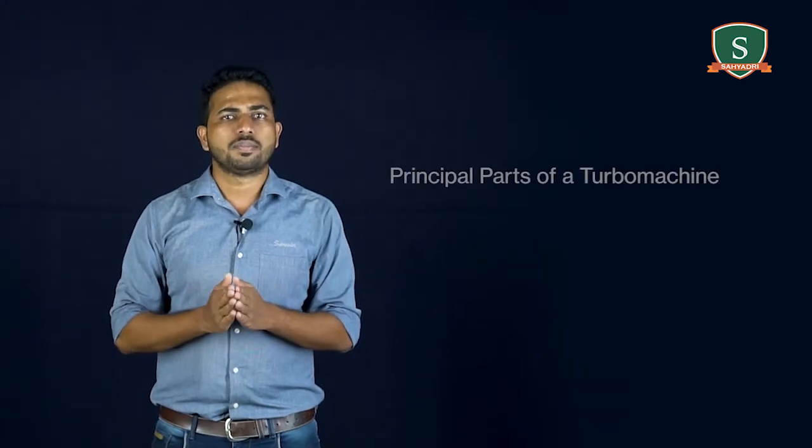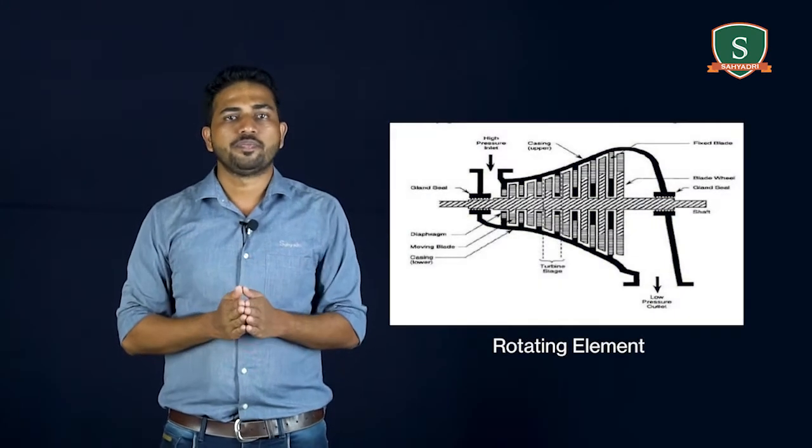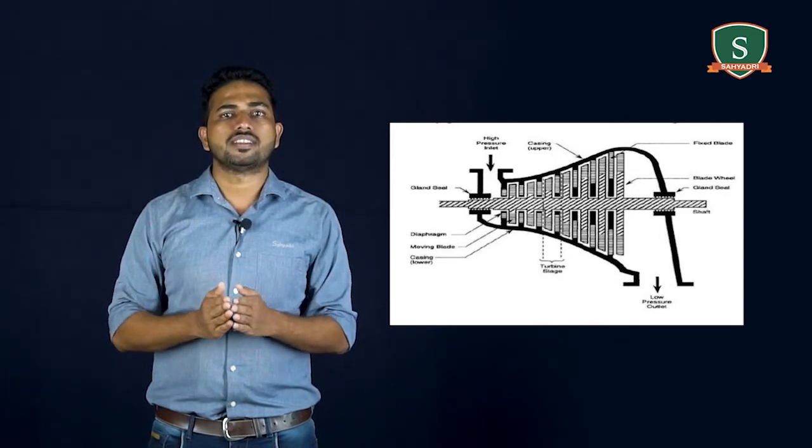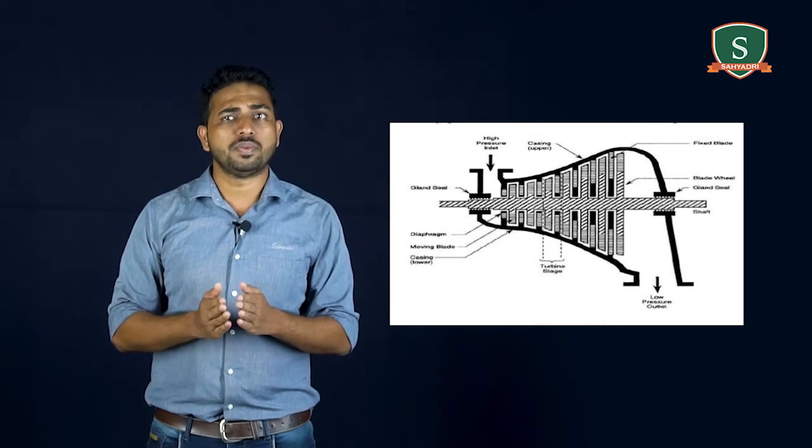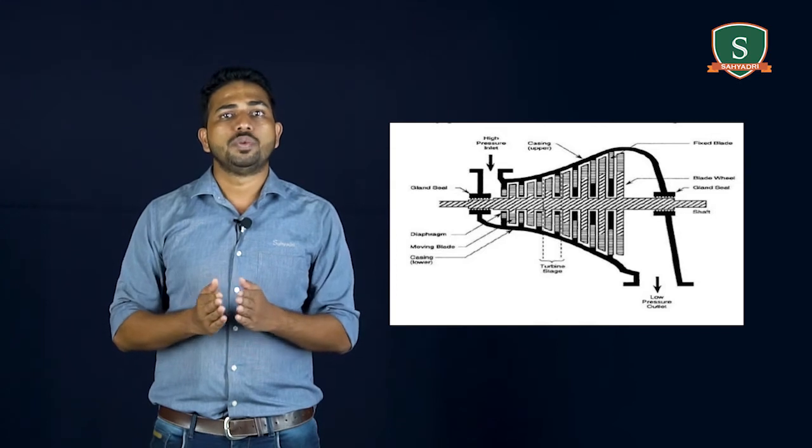Next concept is principal parts of turbo machine. The principal components of turbo machines are: First one is rotating element. It carries vanes, blades and operates in a stream of fluid. Energy transfer occurs between the flowing fluid and the rotating element due to momentum exchange between the two.